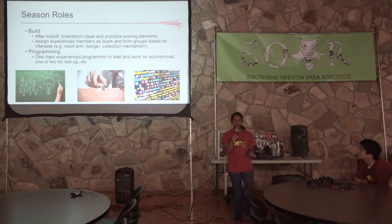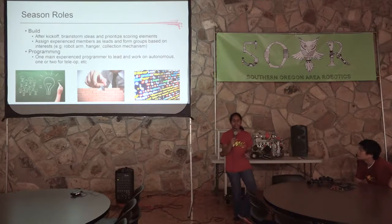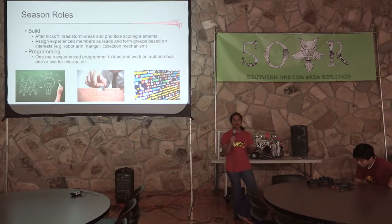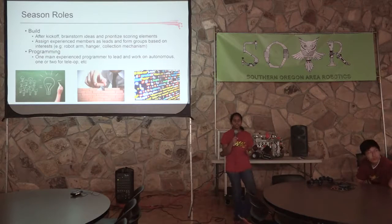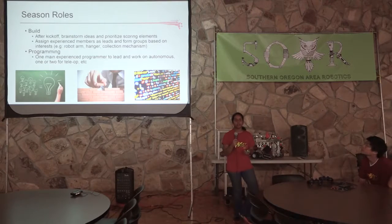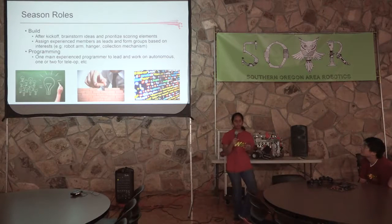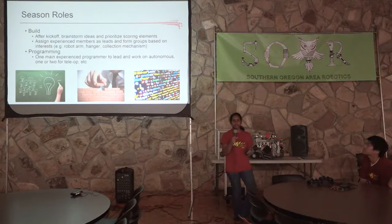During the season, you have the build team. After kickoff when the challenge is released, your team should get together and start brainstorming. You can think about which elements are worth building using a cost-benefit analysis — for example, is it worth building a hanger if it's only worth 10 points? Once you've considered that, people will decide based on their interests which subgroup they want, and you should assign team leads based on their experience for each subgroup.